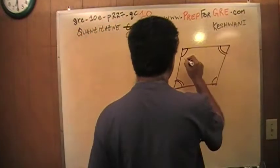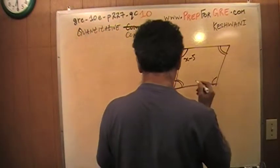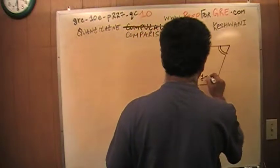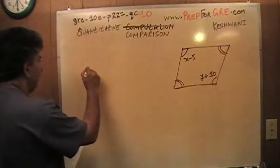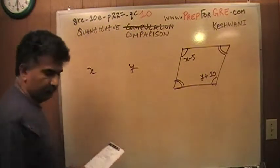And they tell me that this angle is X minus 5, and they tell me that this is Y plus 10. And then they want us to compare X versus Y. That's all. So let's do it then.